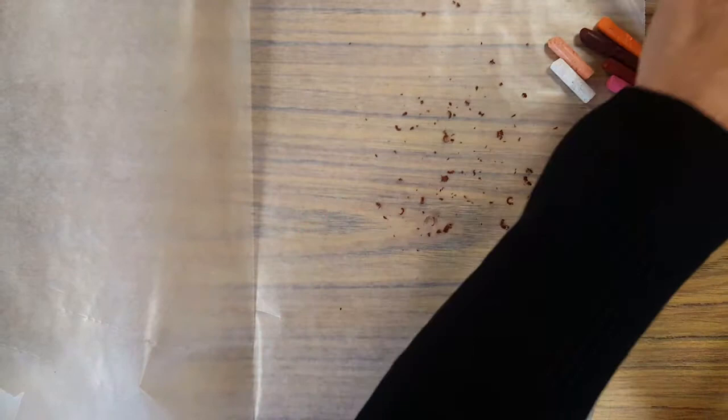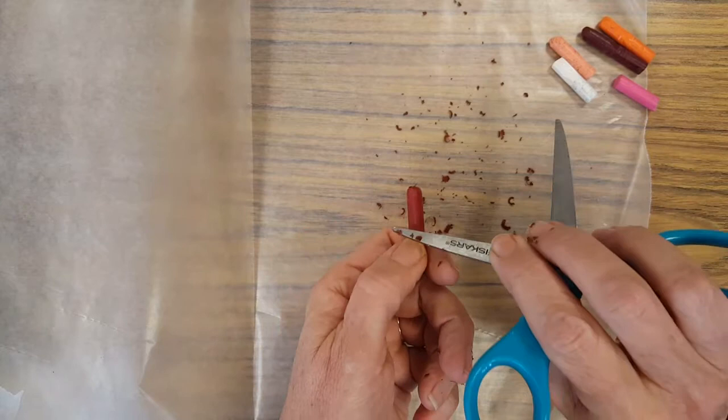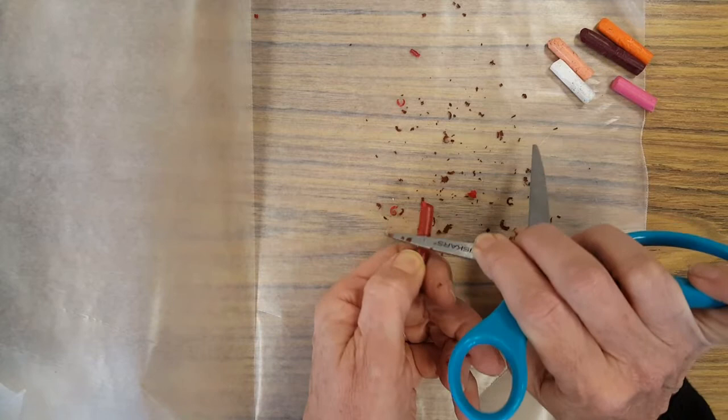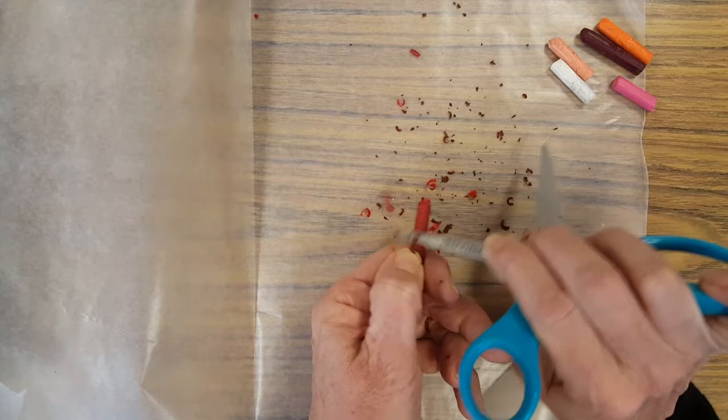Crayon can get kind of staticky when you shave it so you might find it sticks to your scissors and to your fingers and you just have to brush it off. Some crayons wax is softer than others so some of them come off kind of in chunks a little bit and some of them are more smooth and curly.